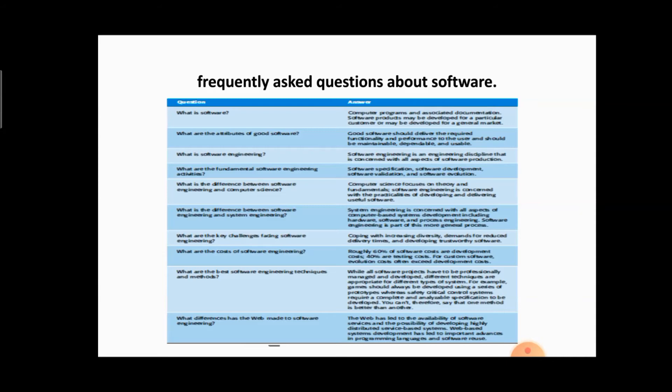Once you understand what software is and the attributes of good software, you should understand what software engineering is. Software engineering is a discipline mainly related to developing software. The fundamentals of software engineering activities include software verification, software development, software specification, and software evolution. The difference between software engineering and computer science is that computer science focuses on theory, while software engineering mainly focuses on developing and delivering software.